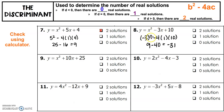For problem 8, we have a = 1, b = −3, c = 10. The discriminant is (−3)² − 4(1)(10) = 9 − 40 = −31. Because the discriminant is negative, there are no real solutions.